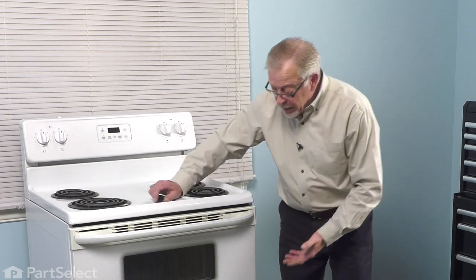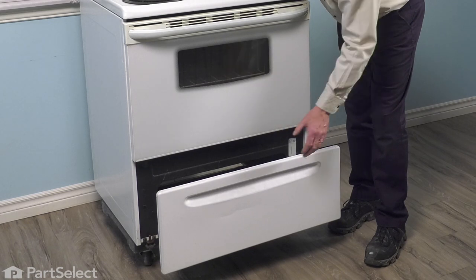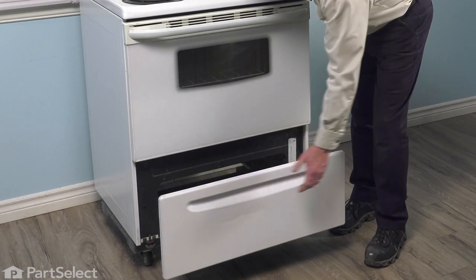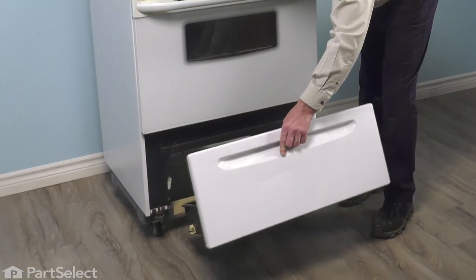Now, to change the rear drawer glide on this range, we're going to start by pulling open that drawer, removing any items that may be in the drawer, and then we'll take the drawer completely out of the range. Pull it out until it comes up against the stops, lift up on it, and then slide it out.